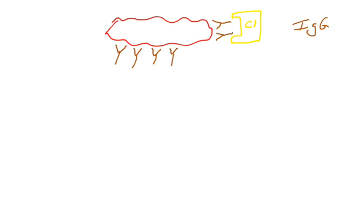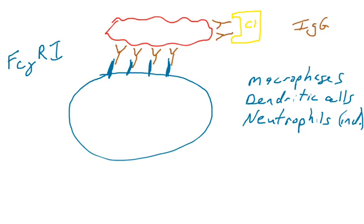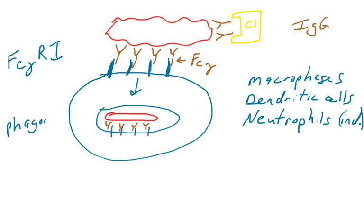IgG can also help us fight a pathogen when it attaches to a pathogen and calls over a phagocyte such as a macrophage, dendritic cell, or neutrophil. On the surface of these cells is the Fc gamma R1 receptor, a protein found on phagocytes. The Fc gamma R1 receptor binds the Fc gamma region of IgG. If a pathogen is covered in IgG, that will attract phagocytes over, and they'll phagocytose it. This process of covering a pathogen in antibody, making it more attractive to phagocytes, is called opsonization. We saw that with complement.